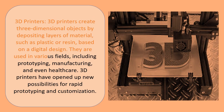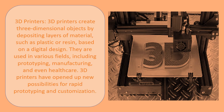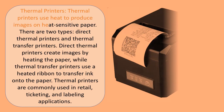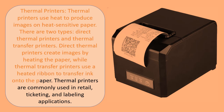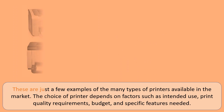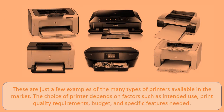6. 3D printers. Thermal printers use heat to produce images on heat-sensitive paper. There are two types: direct thermal printers and thermal transfer printers. Direct thermal printers create images by heating the paper, while thermal transfer printers use a heated ribbon to transfer ink onto the paper. Thermal printers are commonly used in retail, ticketing, and labeling applications.